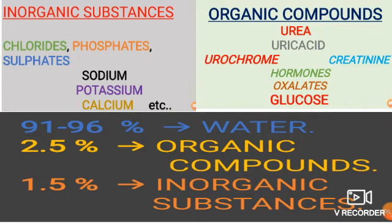In summary, urine is pale yellow in color and contains about 91 to 96 percent water, 2.5 percent organic compounds such as urea, uric acid, urochrome, creatinine, hormones, oxalates, and glucose, and 1.5 percent inorganic substances. Generally, urine is slightly acidic in nature, but it can later convert to slightly alkaline.